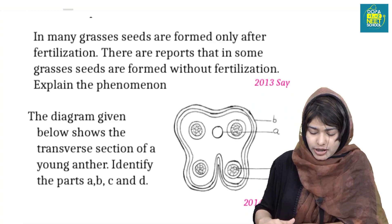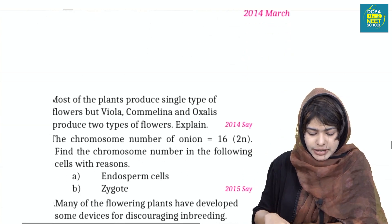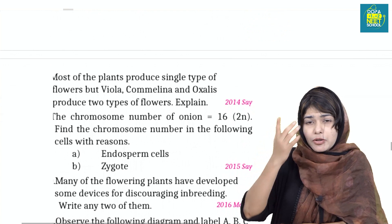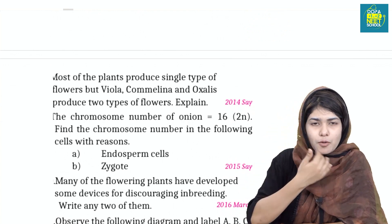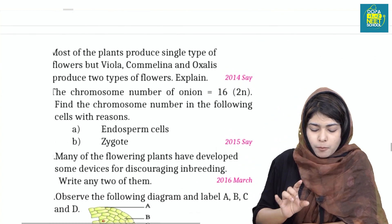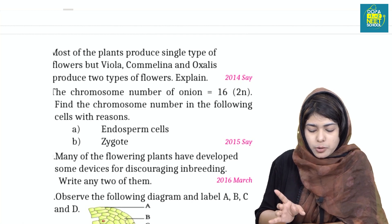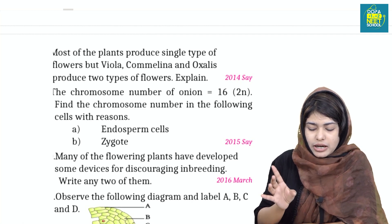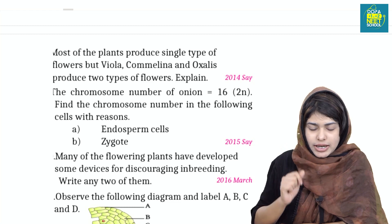It is a phenomenon. Most of the plants produce a single type of flower, but viola, oxalis, and related plants produce cleistogamous flowers.